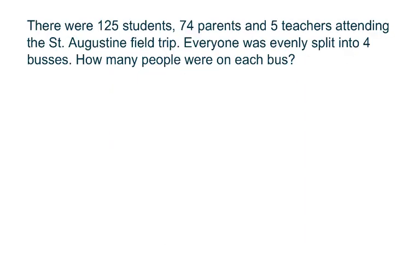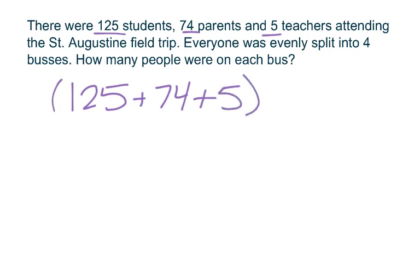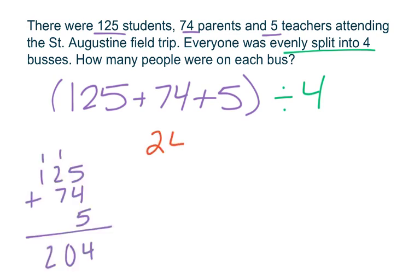Our next problem says there were 125 students, 74 parents, and 5 teachers attending the St. Augustine field trip. Everyone was evenly split into 4 buses. How many people were on each bus? In order to solve this problem I need to find my total — I don't know how many total people there are yet. I know that there are 125 students, 74 parents, and 5 teachers all going on the trip. To find my total number of people I need to do some addition: 125 plus 74 plus 5 to find my total. After I find my total, then I can split it evenly into four groups. There are 204 people attending the trip and I need to split those evenly into four groups.